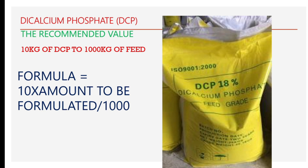The next thing we are going to look at is dicalcium phosphate (DCP). This is a limiting mineral in the fish diet and must be supplied in the right proportion to avoid deficiency. To add dicalcium phosphate, take 10 kg of DCP per 1000 kg of feed. The formula to use is: 10 multiplied by the amount to be formulated, then divided by 1000. This gives you the amount of DCP to be added.